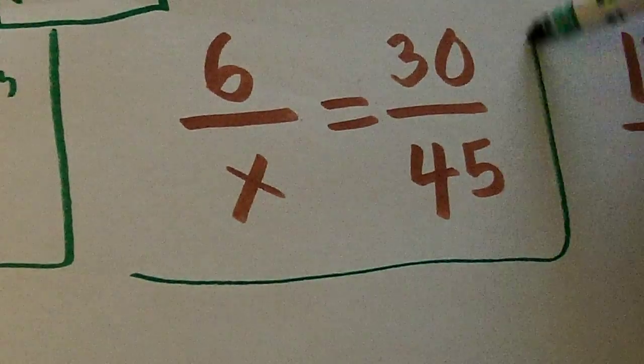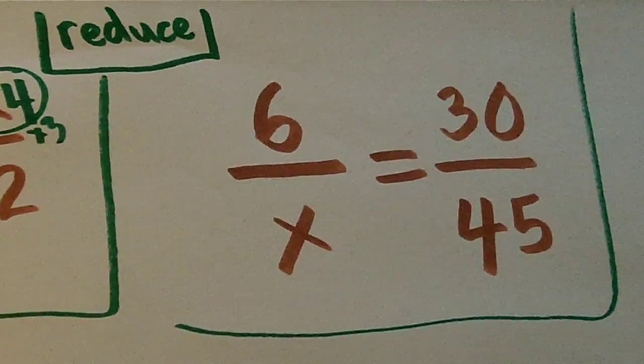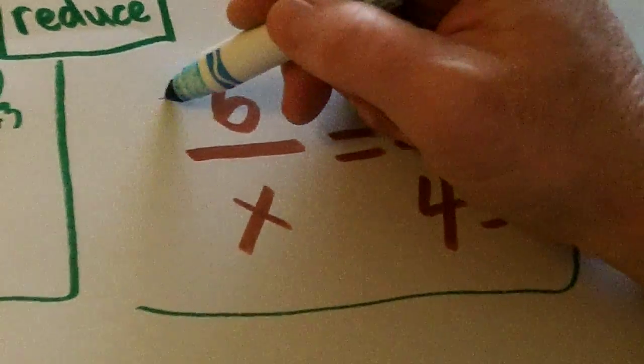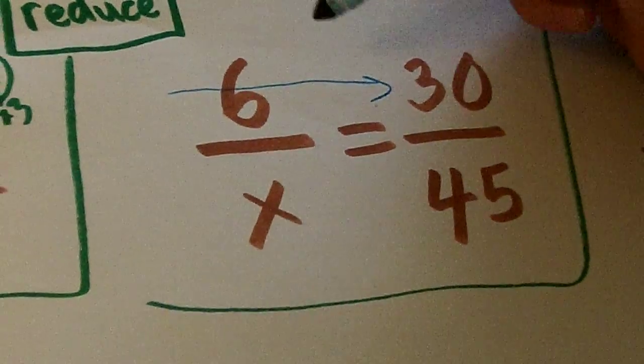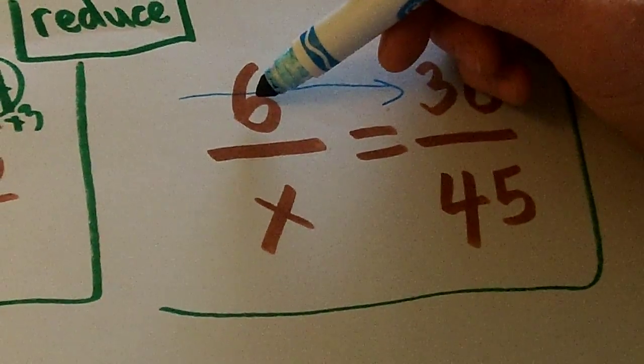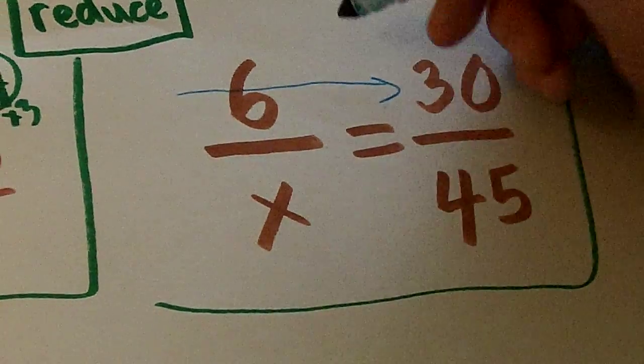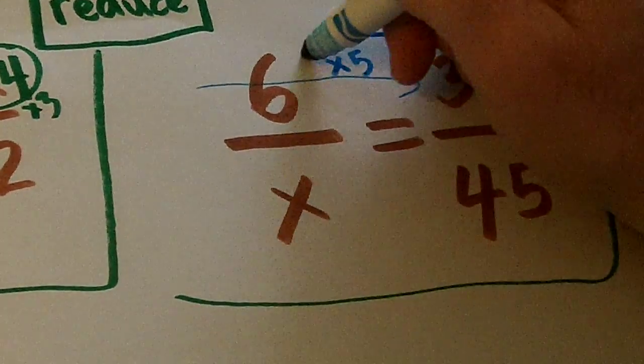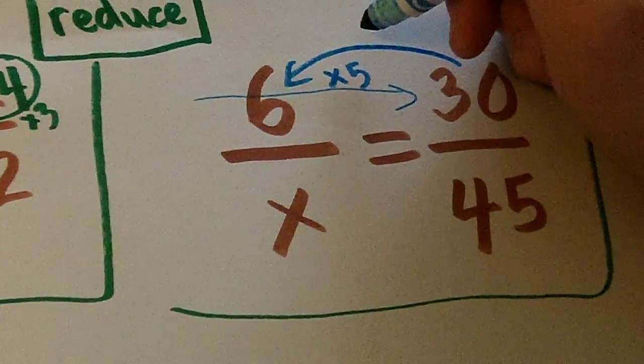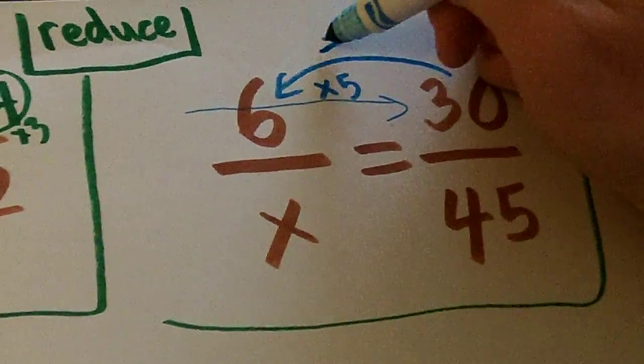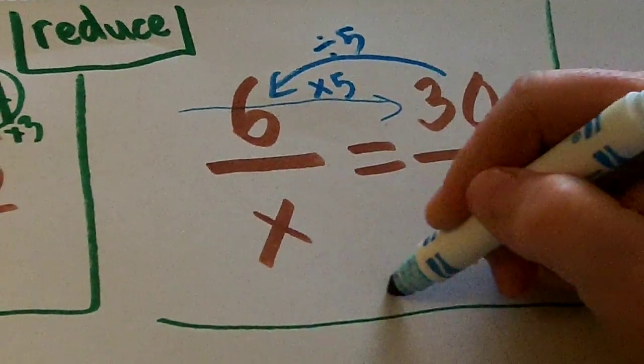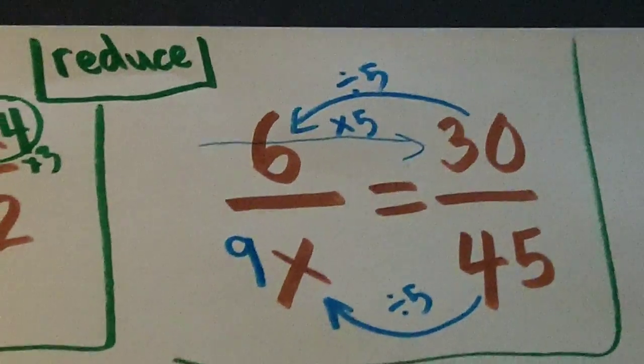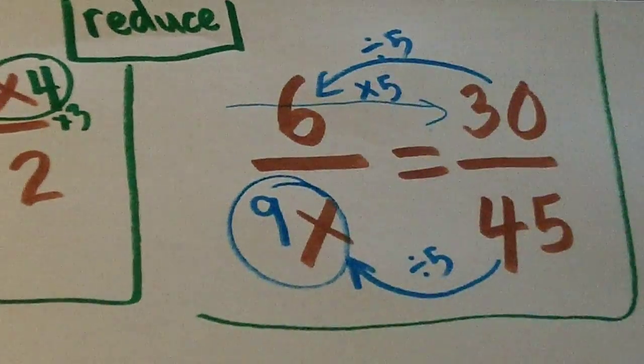Now let's go to this second one here. We can not only go up and down, but we can go across. Horizontal reducing. How does 6 become 30? We multiply by 5. Or we could go this way: How does 30 become 6? We divide by 5. So what's 45 divide by 5? 9. See how easy that is?